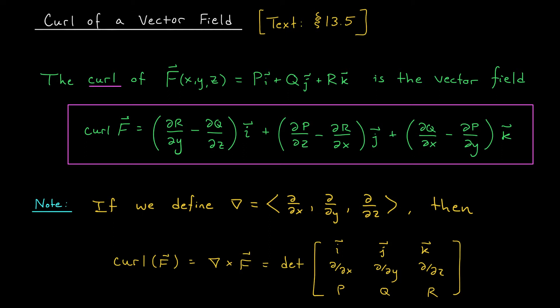I know what you're thinking — do you actually expect me to memorize this? No, I don't even memorize it. It turns out we have a really nice way of thinking about the curl that requires no memorization. We're going to define this operator, which we call del or nabla. It's a vector that consists of our derivative operators: partial by partial x, partial by partial y, and partial by partial z. It turns out that this nasty curl formula is really the cross product of this vector of partial derivatives and our vector field f.